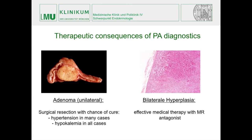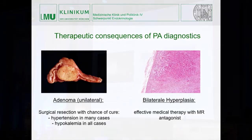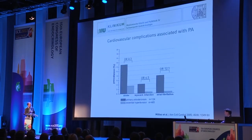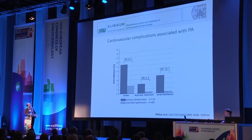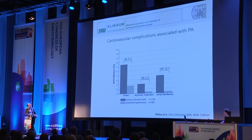It's worthwhile to look for this because there are clearly therapeutic consequences. For the unilateral form, surgical resection has a great chance of cure for hypokalemia in almost all cases and for hypertension in many cases. The bilateral form can be quite effectively treated with mineralocorticoid receptor antagonists such as spironolactone. It's also important because aldosterone evokes cardiovascular complications — independent of the grade of hypertension, you have a much higher likelihood of stroke, myocardial infarction, or atrial fibrillation if you have high levels of aldosterone.